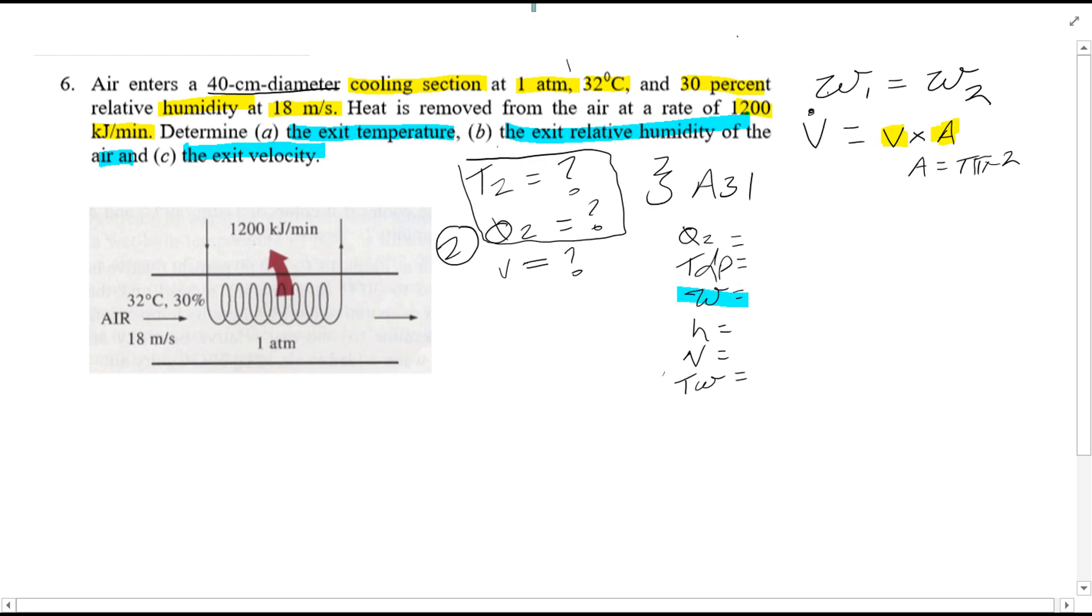This is key: as we said earlier, W1 is equal to W2, so we're interested in finding that value. The other value we're interested in finding is the specific volume, which we can find using the equation that we've got on the top right because of what's provided.